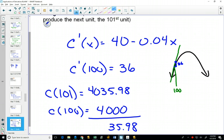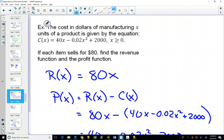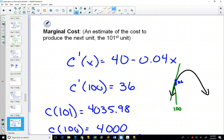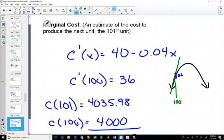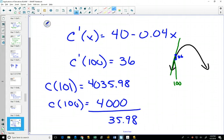So what I did is I plugged in 101 into my original cost function. And it tells me that to produce 101 items, it's going to cost me $4,035.98. To produce 100 of them, it's going to cost me $4,000. So how much did the 101st one actually cost me? $35.98.